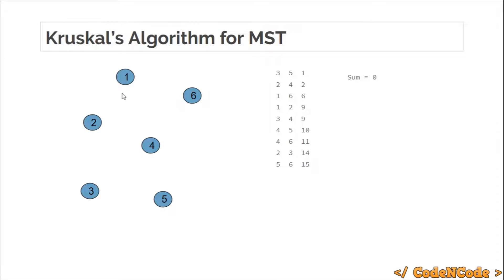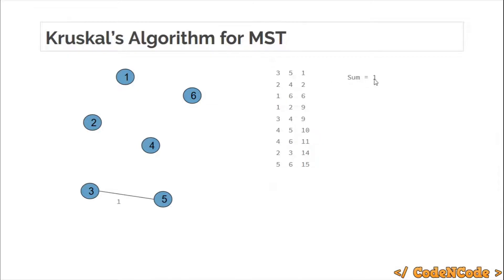After sorting the edges, we start with a disconnected graph — basically the graph contains N connected components, where each node is a different connected component. We also track the sum of the total MST. We start from the first edge and traverse the whole list, deciding whether to include each edge in our MST. The first edge says nodes 3 and 5 are connected with weight 1. We check whether 3 and 5 are already connected — they are not, so we include this edge and add 1 to our MST sum.